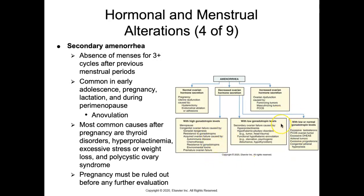With low or normal gonadotropin levels, we can see excessive testosterone, PCOS, ovarian tumors, excessive DHEAS, adrenal tumors, excessive progesterone, or congenital adrenal hyperplasia. Increased ovarian hormone secretion leading to ovarian dysfunction can be caused by tumors or PCOS.